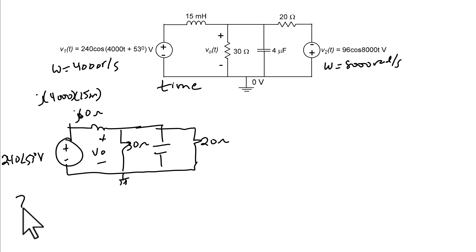The impedance of the capacitor is negative J over omega C or negative J over 4000 times 4 microfarads. So the impedance of the capacitor is negative J 62.5 ohms.